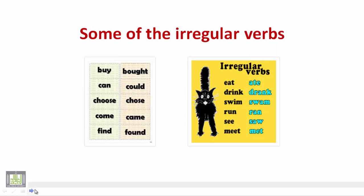Here we have some of the irregular verbs: buy/bought, can/could, choose/chose, come/came, find/found, eat/ate, drink/drank, swim/swam, run/ran, see/saw, meet/met. Notice that all of the second forms of these verbs do not have -ED at the end — that's why we call them irregular verbs. Thank you very much for your careful listening and see you in Part 2.